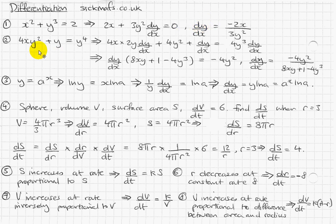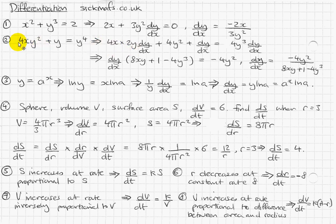Let's look at a harder example. We're going to differentiate this — it's the product of two things: 4x and y squared. So differentiating implicitly is really like normal differentiation. You've got the product 4x and y squared, which means you have to use the product rule. That gives you 4x times the differential of y squared, plus the differential of 4x times y squared. 4x times the differential of y squared is 2y — you bring the 2 forwards just like normal — and the differential of 4x is just 4, giving 4y squared.